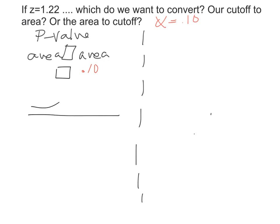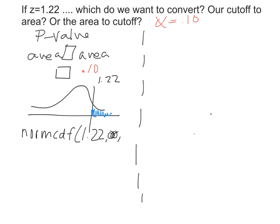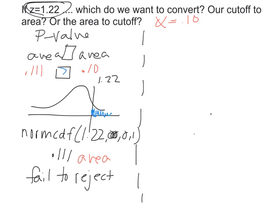Since this is a right-tailed test, our z-score is 1.22 and we want the area to the right. Using normalcdf from 1.22 to infinity on the standard normal gives an area of approximately 0.111. We've taken our p-value (originally a cutoff) and converted it to an area. Comparing: 0.111 is bigger than our threshold of 0.10, so we've passed the threshold — we fail to reject H₀.